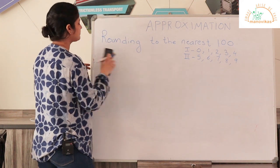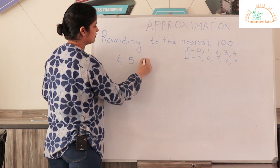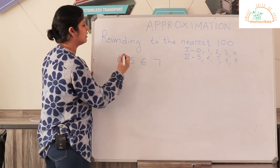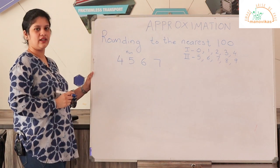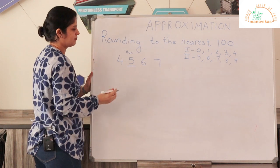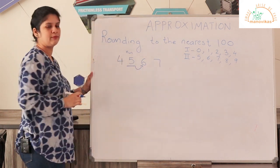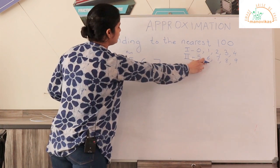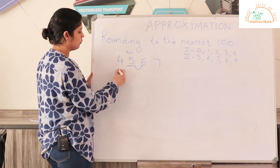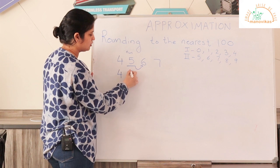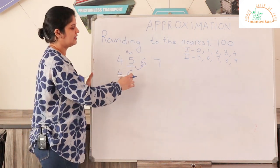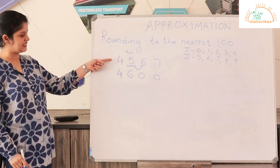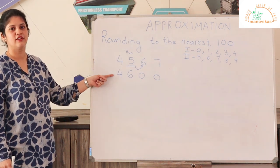Let us take an example: 4,567. Since we are rounding to the nearest 100, we have to concentrate on the digit in the hundreds place. The digit in the hundreds place is 5. The digit after it will decide whether the hundreds place will change or not. 6 falls in the second range, so the digit in the hundreds place will change and increase by 1. 5 will now change into 6. Since we are rounding to the nearest 100, the digits after the hundreds place have to be 0s. So the number 4567 when rounded to the nearest 100 becomes 4600.